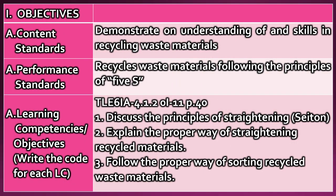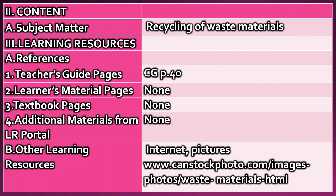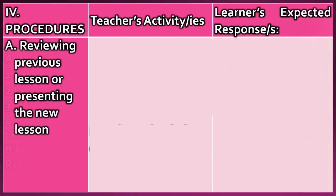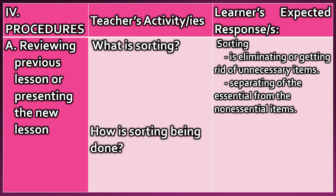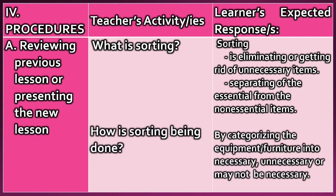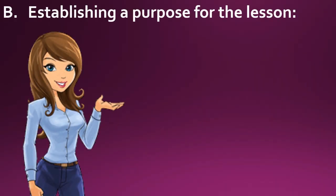Here are the objectives of the lesson. These are the contents and the procedure: A — reviewing the previous lesson or presenting the new lesson; B — establishing a purpose for the lesson.